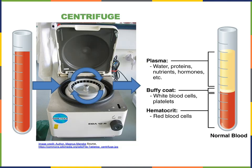A centrifuge is a machine used to separate the components of blood. A tube containing a sample of blood is placed into a slot that holds the tube at an angle, then the centrifuge spins rapidly, creating a centrifugal force that causes the more dense components of blood to move to the bottom of the tube and the less dense components to rise to the top.